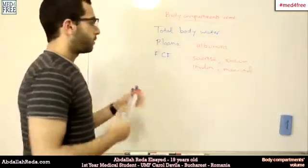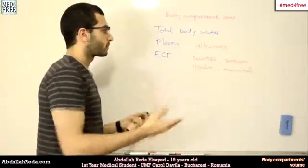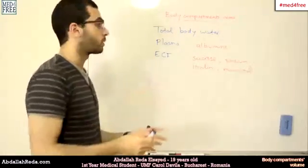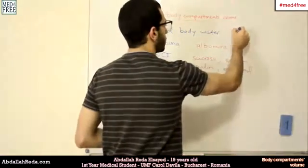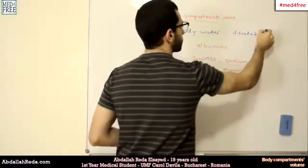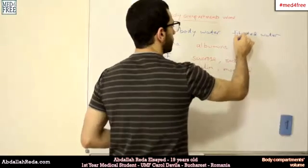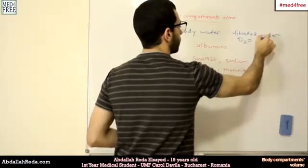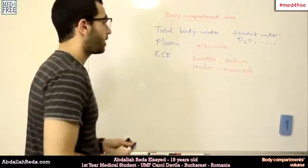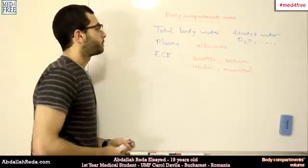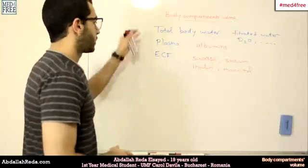For the total body water, we use something permeable to all kinds of membranes, since this encompasses the whole compartment. We can use tritiated water, deuterium, or other forms of radioactive or labeled water.